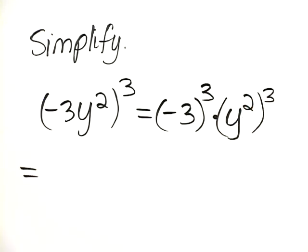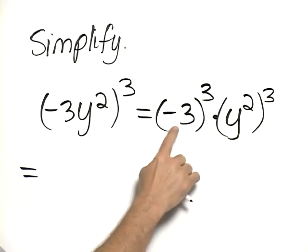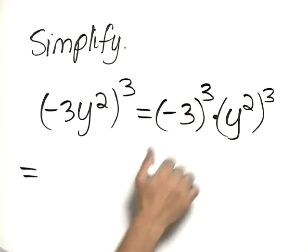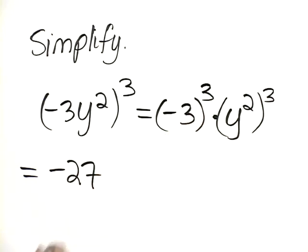We work on each of those individually. Negative 3 cubed would be negative 3 times negative 3 times negative 3, which equals negative 27.